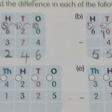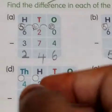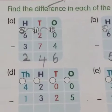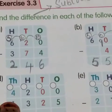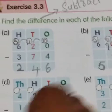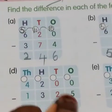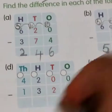Now let us do part D. D is very simple — similar to A, B, and C, but here there are 4 digits. The question is 4200 minus 1325.